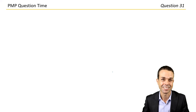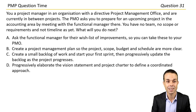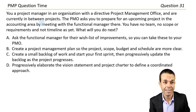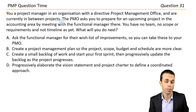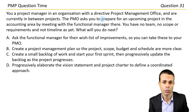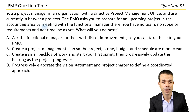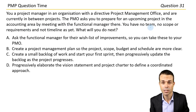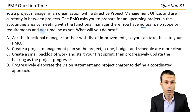Let's get into these questions. You're a project manager in an organisation with a directive project management office and are currently in between projects. The PMO asks you to prepare for an upcoming project in the accounting area by meeting with the functional manager there. You have no team, no scope, no requirements, and no timeline as yet. What will you do next?